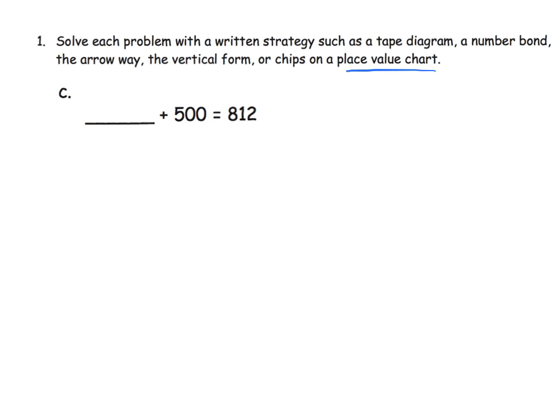So this problem says solve each problem with a written strategy such as a tape diagram and number bond, the arrow way, vertical form, which is kind of like the traditional algorithm, and then chips on a place value chart. So we've got a variety of ways to solve that we can choose from. Parents and teachers, your job is to expose students to all of these methods, maybe have all these things up on a poster so that students can look at the wall and say, I want to use the tape diagram as a memory device, scaffolding, so that students can remember all the things they've learned and then apply them as needed.